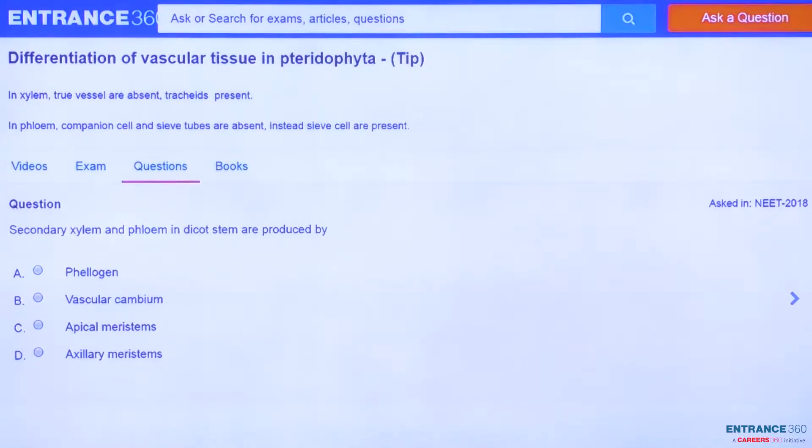The vascular system found in dicots is somewhat more complex than that found in monocots. In dicot stems, the vascular bundles are arranged in a ring with the pith concentrated at the core.